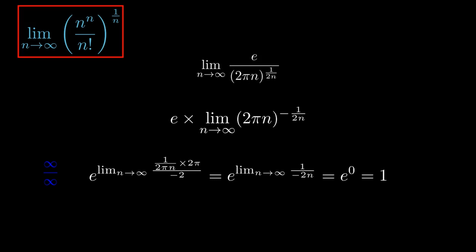This simplifies to e raised to the limit as n goes to infinity of 1 divided by minus 2n. If we evaluate this limit, we get e raised to 0, which is 1.